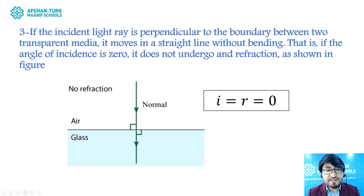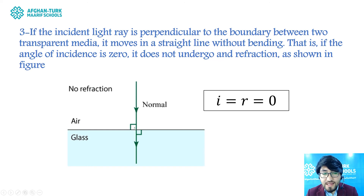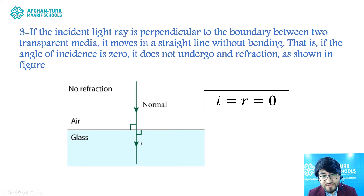Condition 3: if the incident light ray is perpendicular to the boundary between two transparent media, it moves in a straight line without bending — that is, if the angle of incidence is zero, it does not undergo refraction. The incident light ray is perpendicular, the angle of incidence is zero, so it does not refract and moves in a straight line. In this case, I and R are both equal to zero.